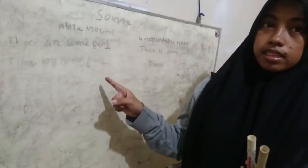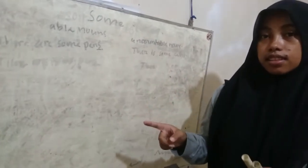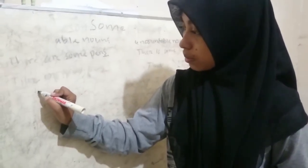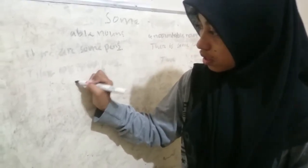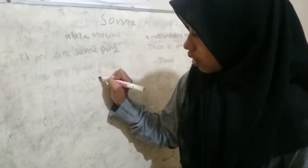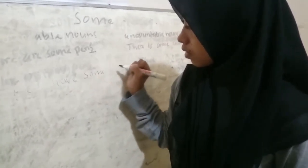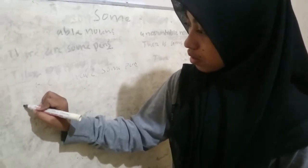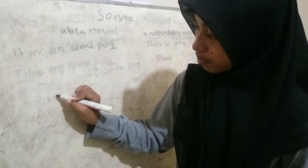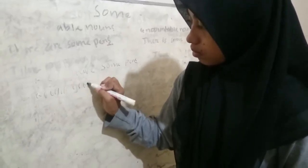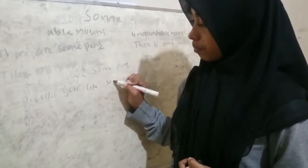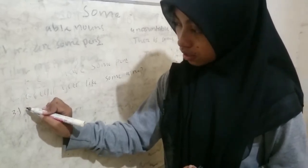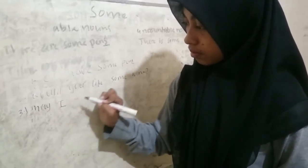The rules of 'some': first, it is used in positive sentences. Second, it is used in offer sentences. Third, it is used in request sentences. Example of a positive sentence: 'I have some pens.' Example of an offer sentence: 'Would you like some wine?'